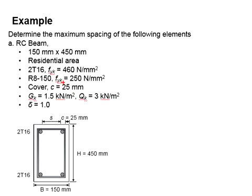The concrete cover c is 25 mm. It is designed for Gk = 1.5 kN/m² and Qk = 3 kN/m². The distribution factor δ is 1.0.